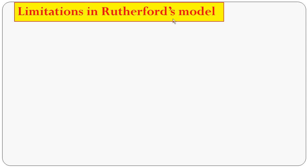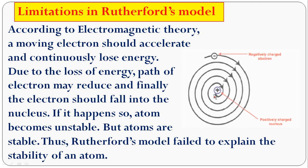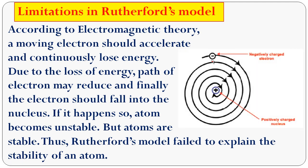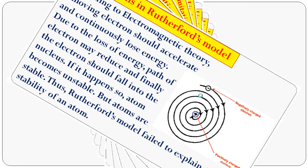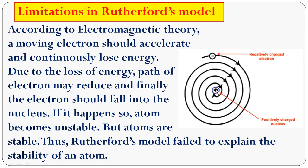The limitations of the Rutherford atom model: according to electromagnetic theory, a moving electron should accelerate and continuously lose energy. Due to this loss of energy, the path of the electron would reduce and finally the electrons would fall into the nucleus, making atoms unstable. But we know that atoms like hydrogen, oxygen, and nitrogen are stable. So the Rutherford model fails to explain the stability of an atom. This is the main limitation of the Rutherford atom model.